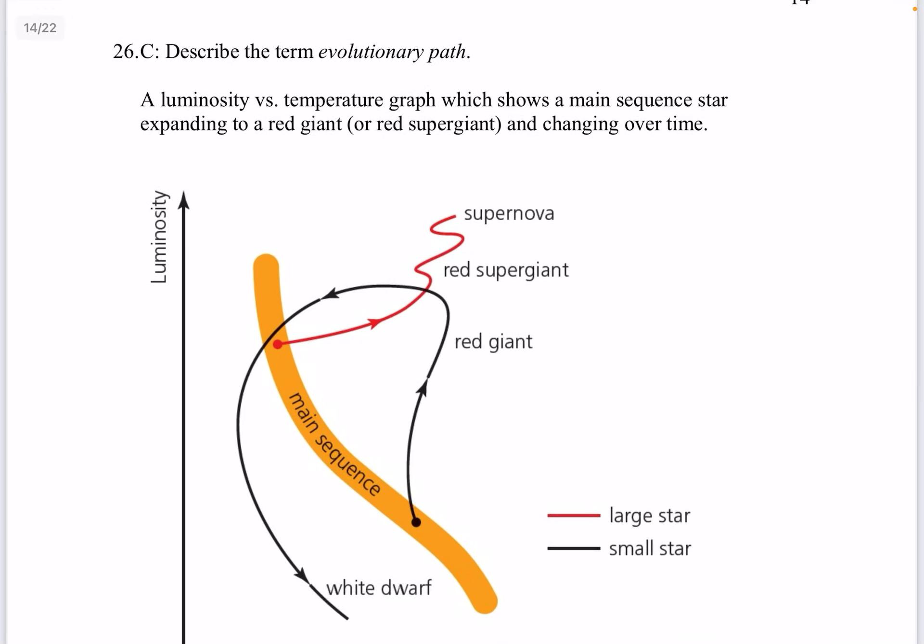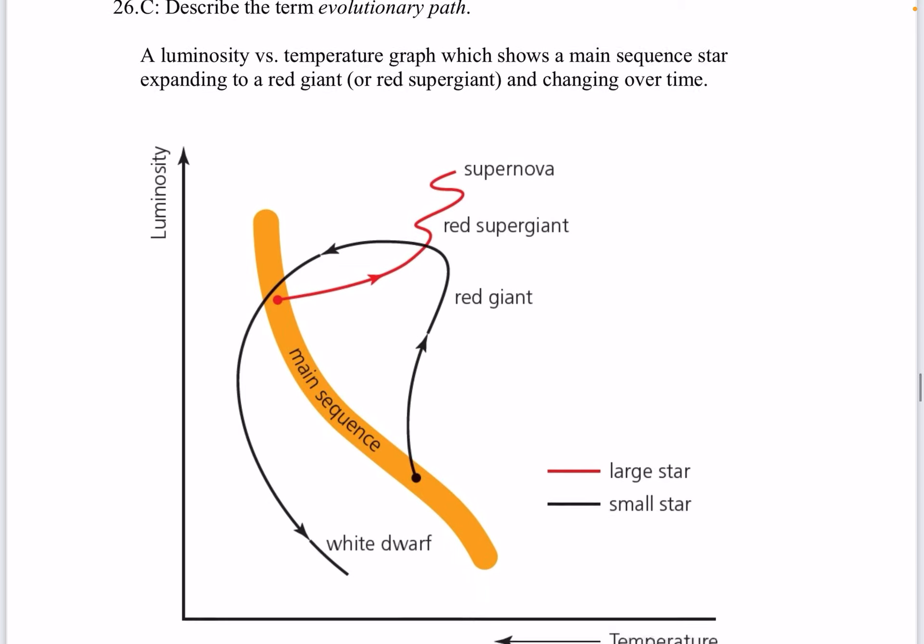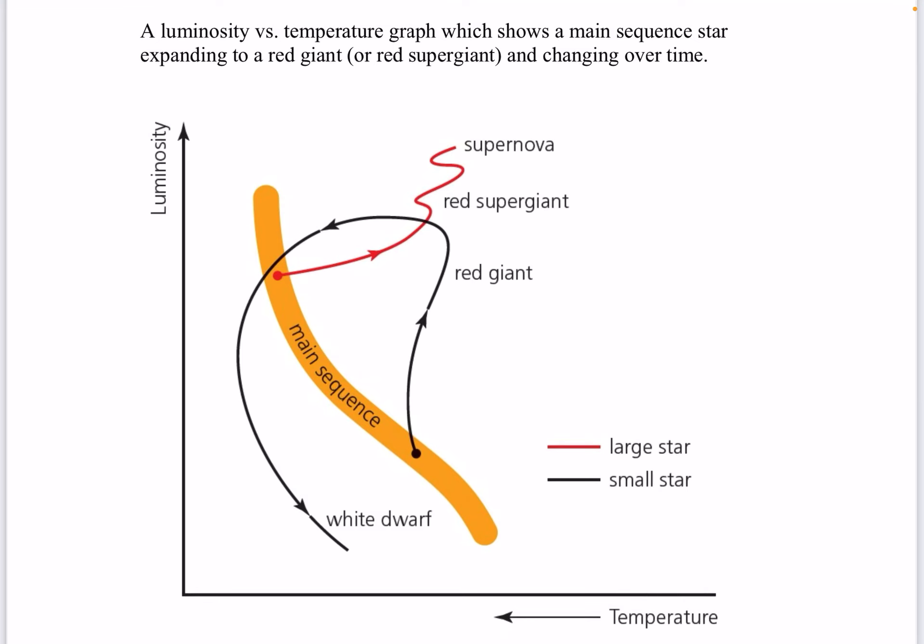Question 26. Describe the term evolutionary path. A luminosity versus temperature graph which shows a main sequence star expanding to a red giant and changing over time. So you could see a main sequence star starts from that dot. Then it becomes a red giant or a red supergiant and then it becomes a white dwarf. The horizontal axis is important. You could see the temperature of the black curve. It's pretty much the same and then it increases and then it decreases. And you could see the main sequence star in red. It becomes a red supergiant and then it goes supernova. In that case, the temperature decreases. You could see the red is for a large star. The black curve is for a smaller star.